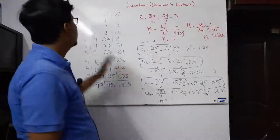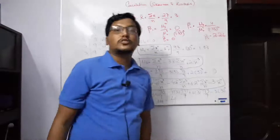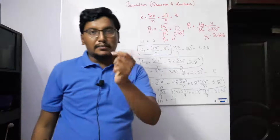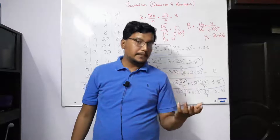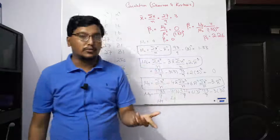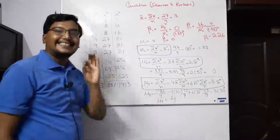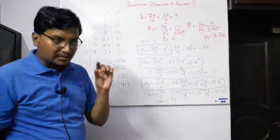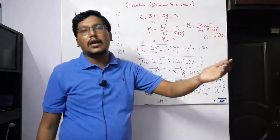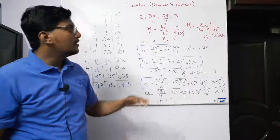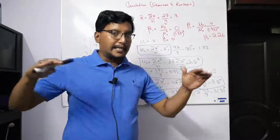Now let's look at the kurtosis of this distribution. The kurtosis beta 2 is 2.26, which is between 0 and 3. A value near 0 is called platykurtic, and exactly 3 is called mesokurtic. Since the result is not 3, this distribution is not a perfectly normal curve — it is symmetric, but not mesokurtic. Since 2.26 is between 2 and 3, it is not platykurtic either, so it is approaching mesokurtic from below.